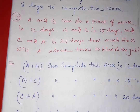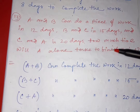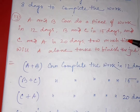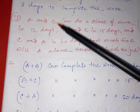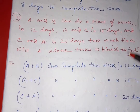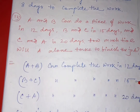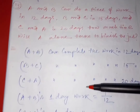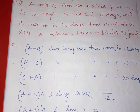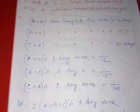Now the next important problem: A and B can do a piece of work in 12 days, B and C in 15 days, and C and A in 20 days. Then how much time will A alone take to finish the job? Here it is not just A or B alone — A and B together complete the work in 12 days. A plus B's one day work is 1 by 12, B plus C's one day work is 1 by 15, and C plus A's one day work is 1 by 20.